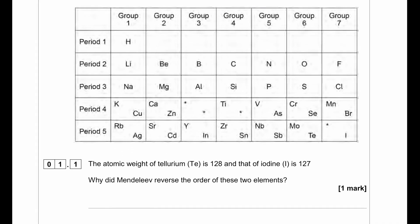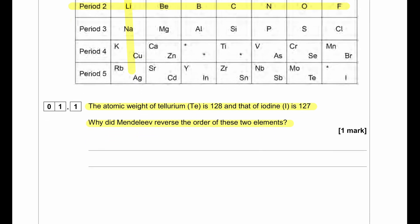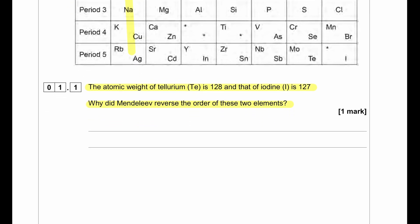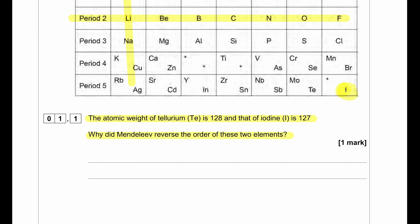We can see that elements are arranged in groups and periods. The atomic weight of tellurium is 128 and iodine is 127. Why did Mendeleev reverse the order of these two elements? The reason is because iodine has similar properties to fluorine, chlorine, and bromine whereas tellurium had similar properties close to selenium, sulphur, or oxygen. So that's why he reversed the order.